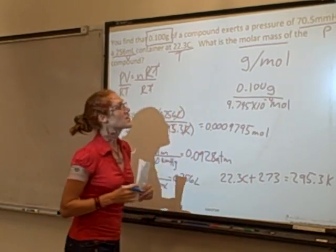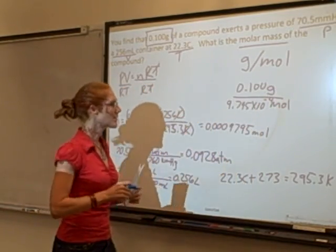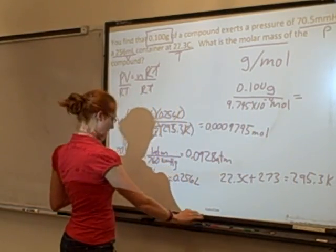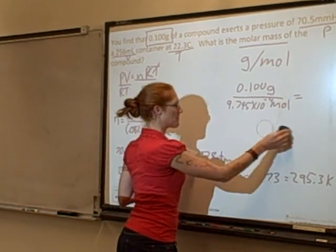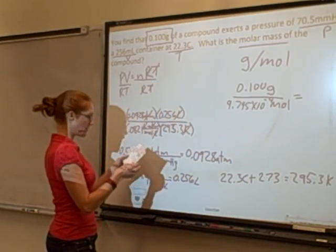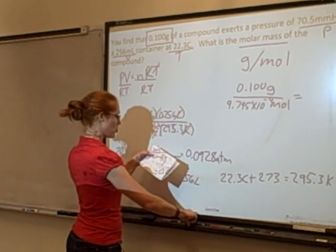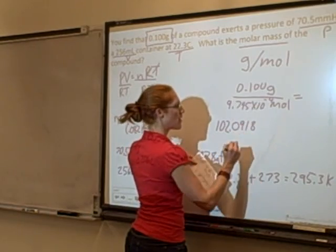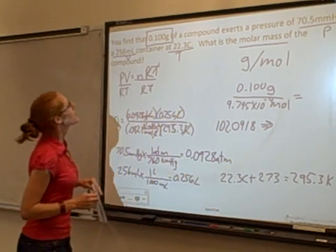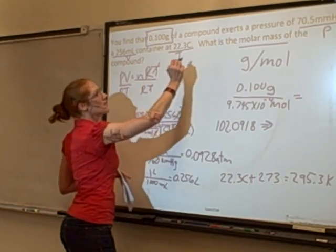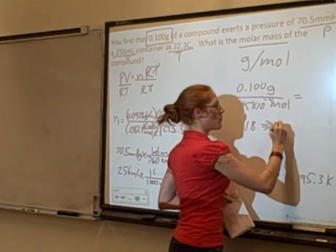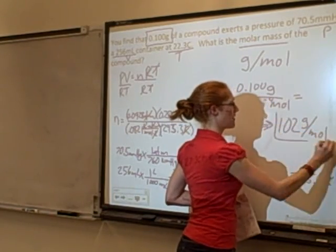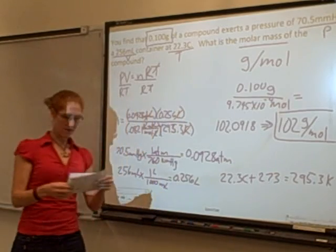So I have this many grams per mole. When you type that in, what you end up getting is 102.0918 grams per mole. Let's look at sig figs. There's three everywhere. So let's put in three. 102 grams per mole. Lovely.